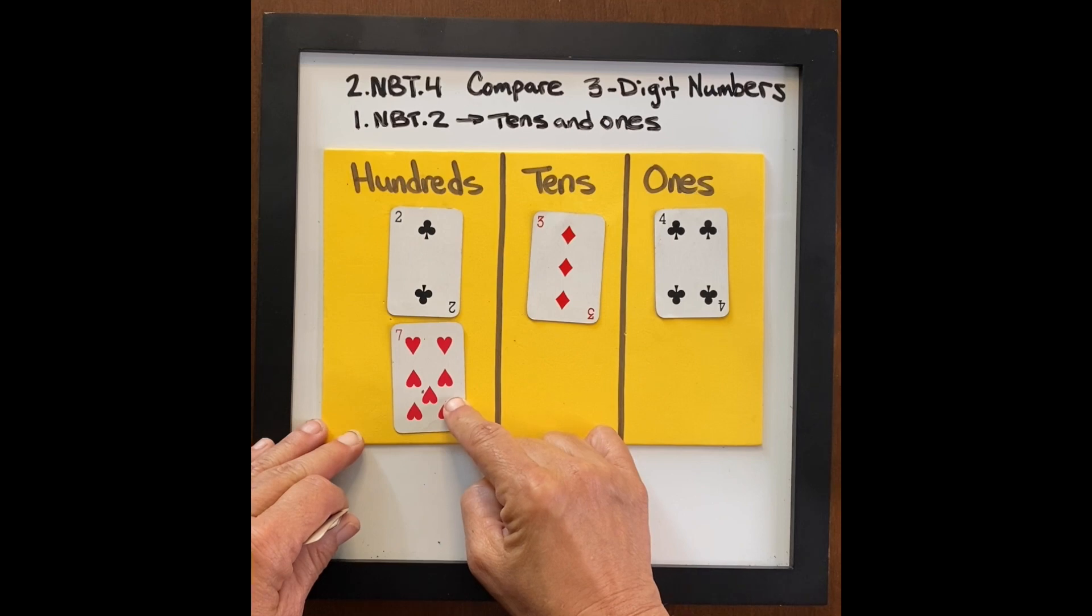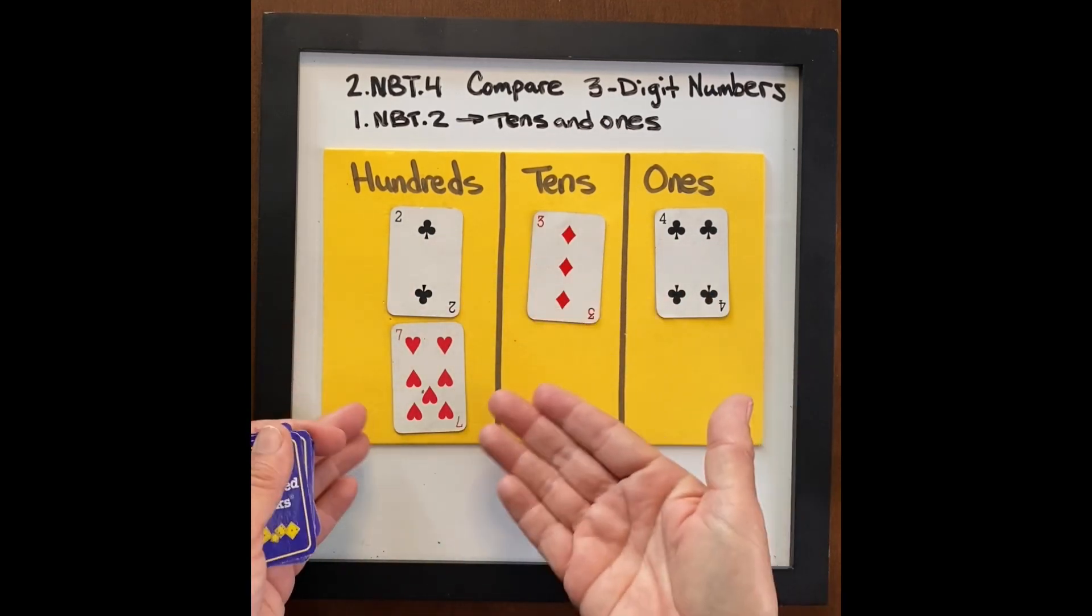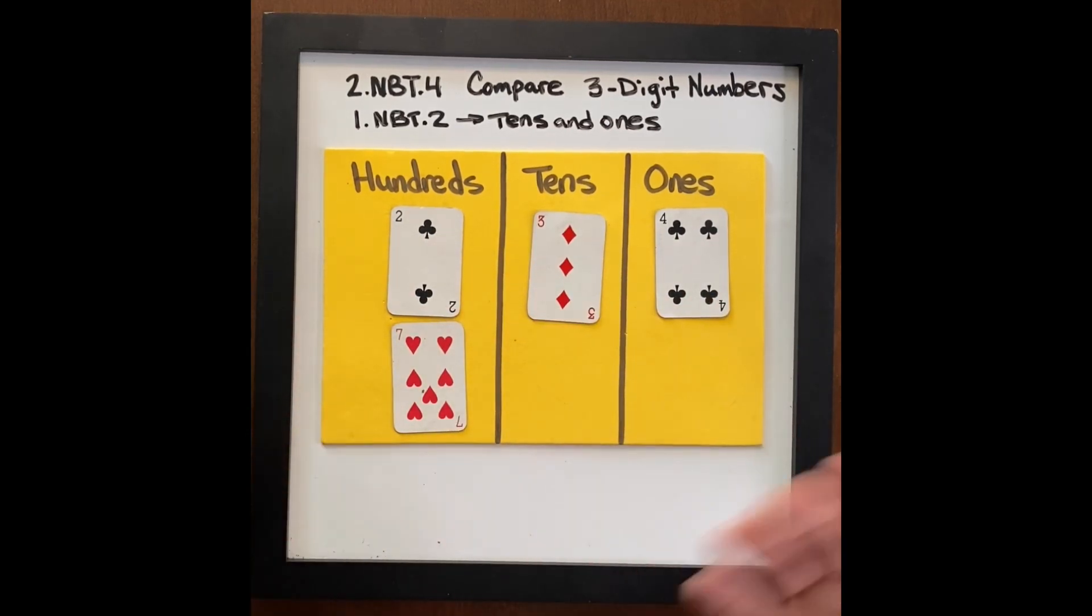Seven hundred. Here you can ask, do we know we made a larger number already? How?